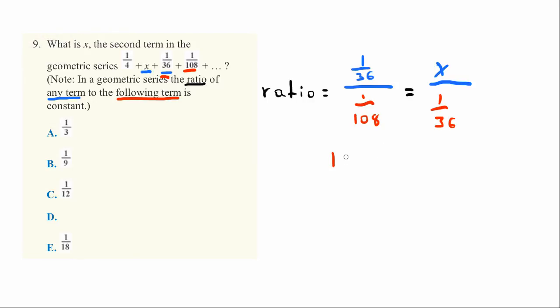108 divided by, or 1/36 divided by 1/108 is exactly equal to 108 divided by 36. And you can always use a calculator if you can't solve this without a calculator.